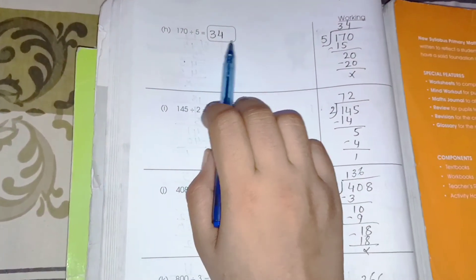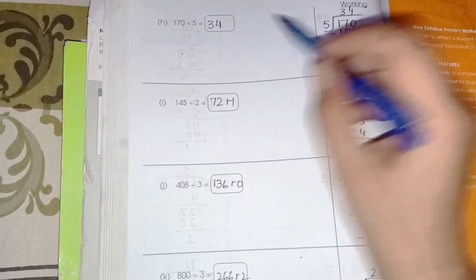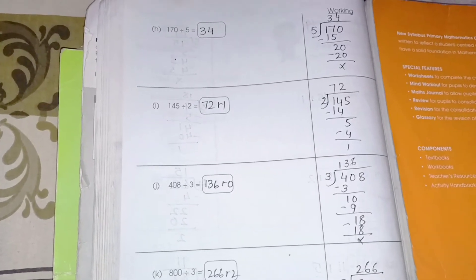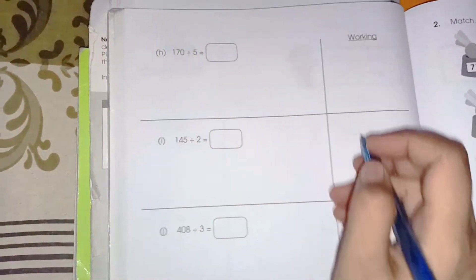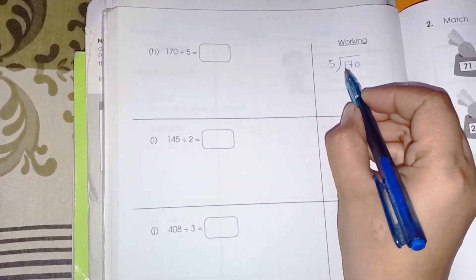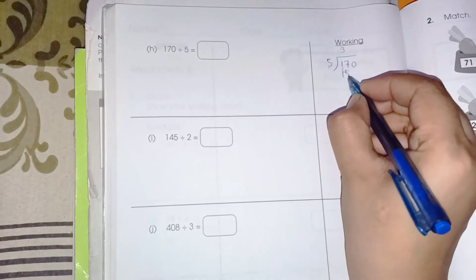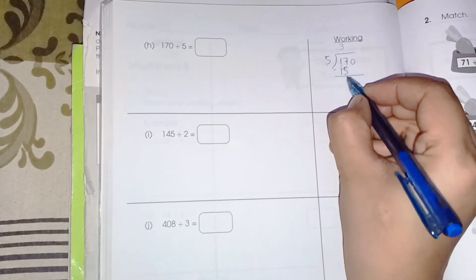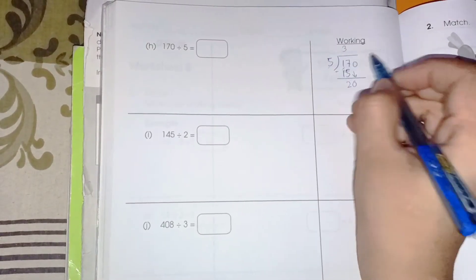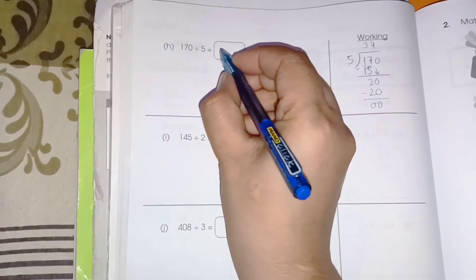Page number 90 has problems F through K. We need to divide: 170 by 5, 145 by 2, 408 by 3, and 800 by 3. Let's work through 170 ÷ 5: 1 is not a multiple of 5 so we take both digits, 17. 5 × 3 is 15; 17 minus 15 is 2, bring down 0 to make 20. 5 × 4 is 20, 20 minus 20 is 0. The answer is 34.